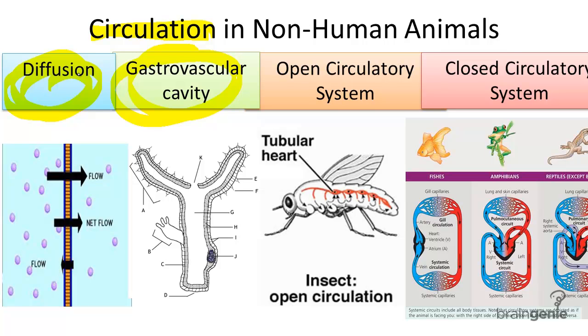Several methods of circulation in animals include diffusion, use of the gastrovascular cavity, and an open or a closed circulatory system.